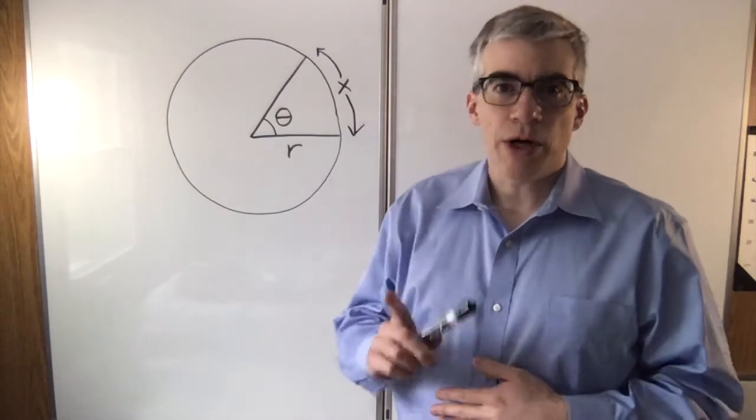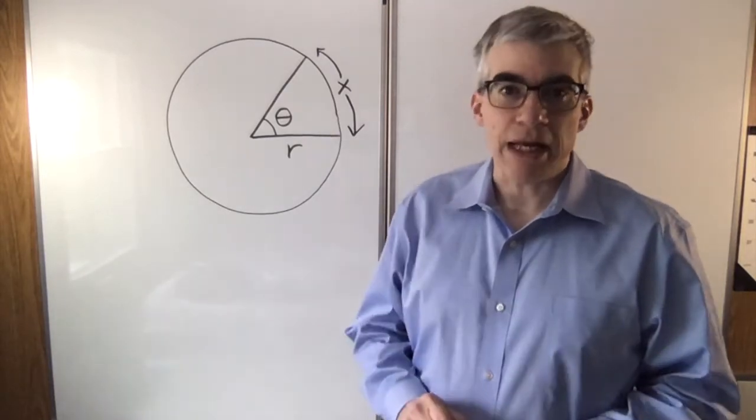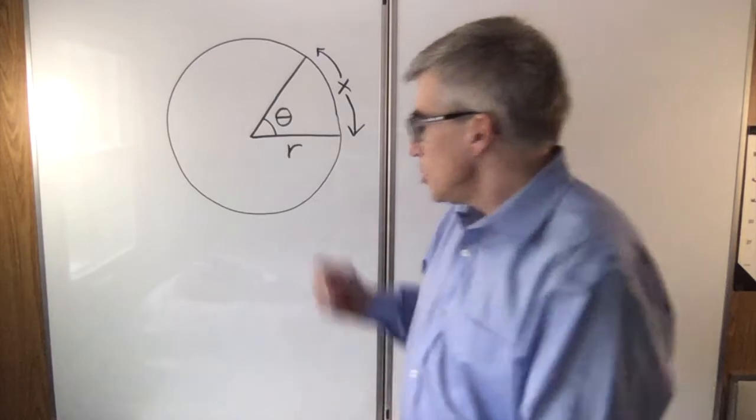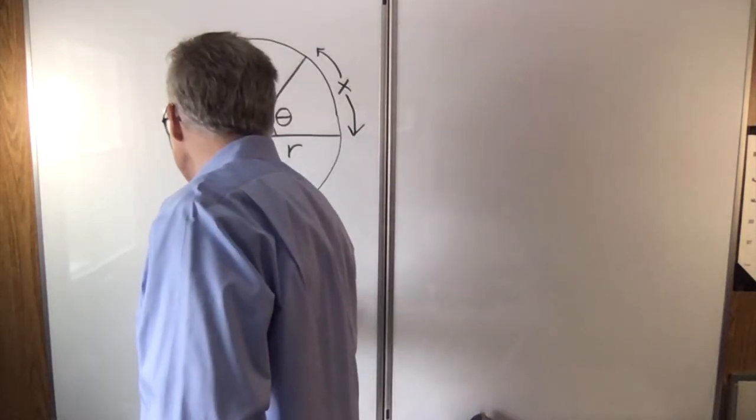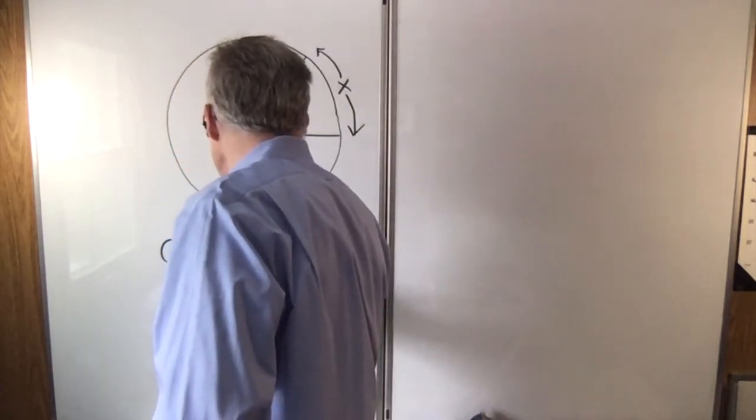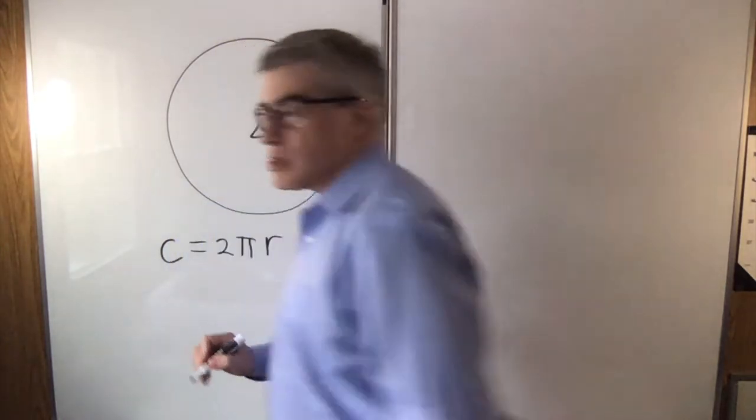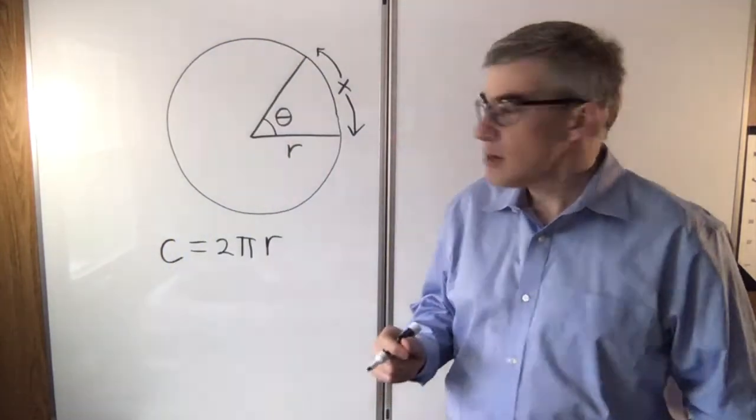There's one arc that you know how to get already, and that's the circumference of a circle. You know that circumference is 2 pi times the radius. What does that get us?